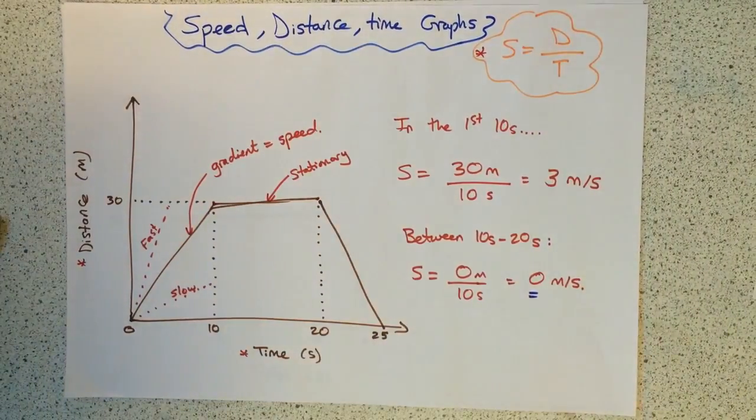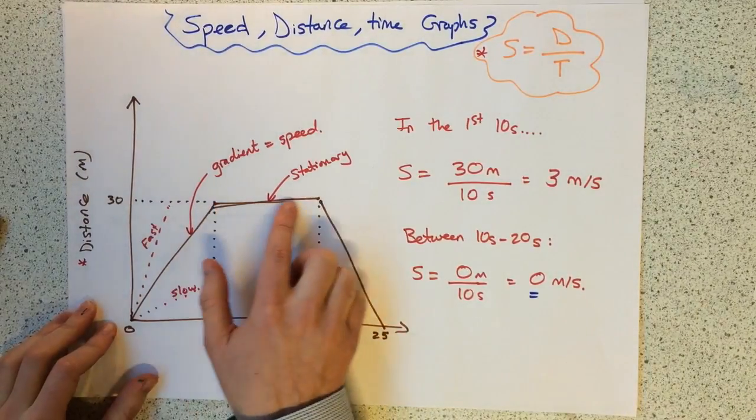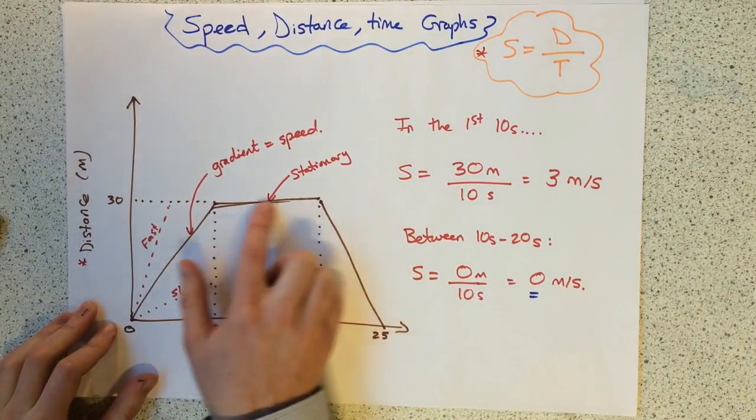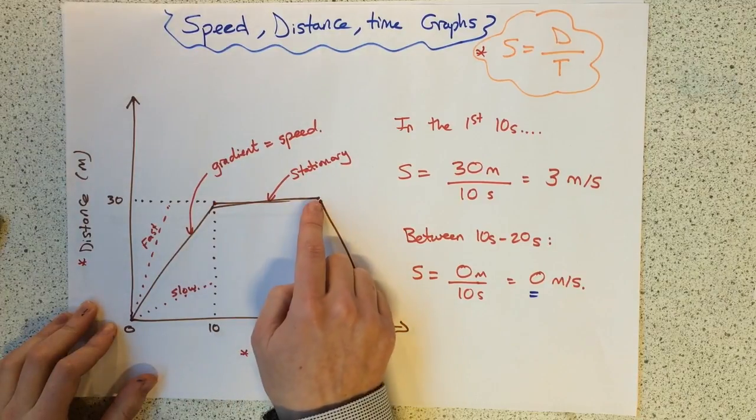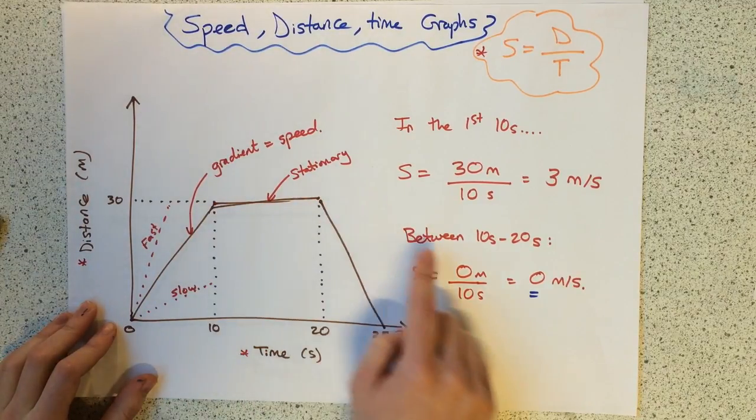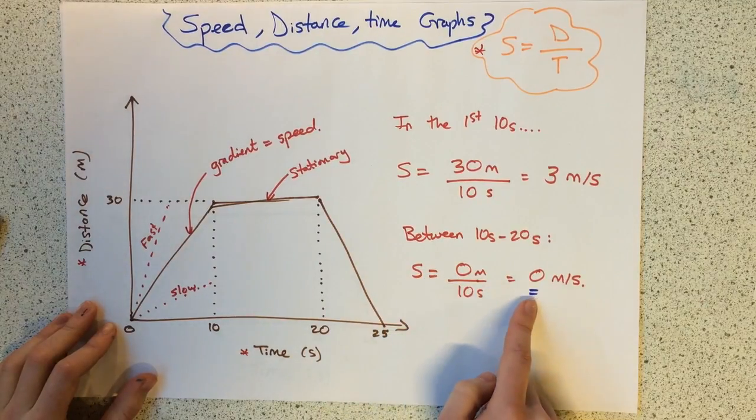This continues from the last video on distance-time graphs, where we looked at the distance here is unchanging. It starts at 30 at that point there, it's still at 30, so it is stationary. The change in distance is 0, therefore the speed is 0.